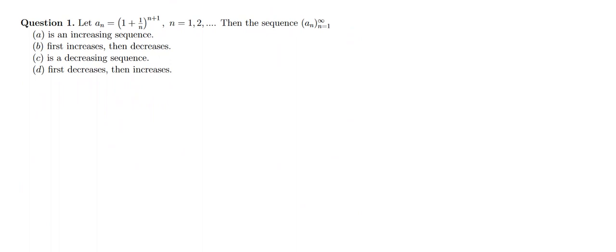Question number 1 says: let a_n be equal to (1 + 1/n) to the power (n + 1), where n goes from 1, 2, and so on. We have four options and need to find the condition of this sequence: is it increasing, first increases then decreases, decreasing, or first decreases then increases?